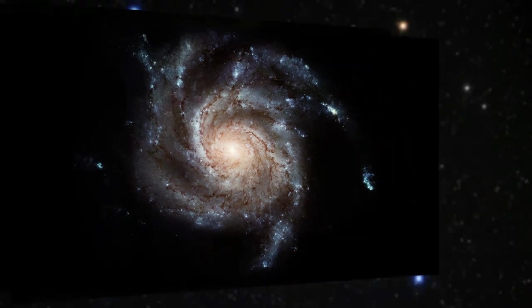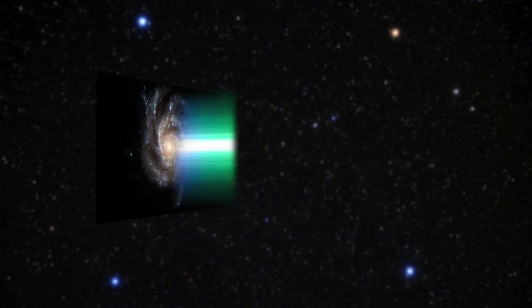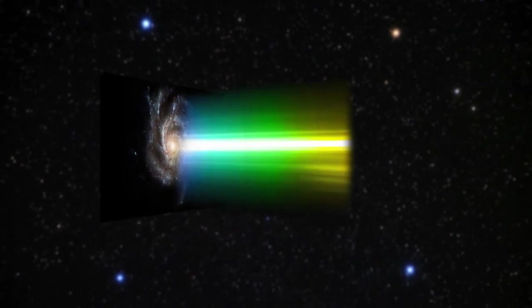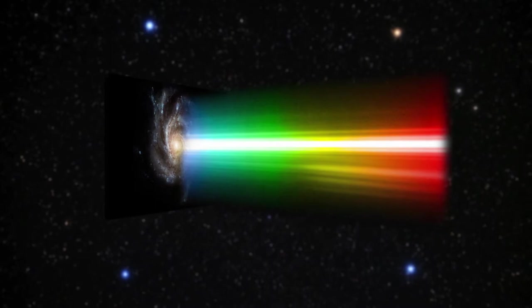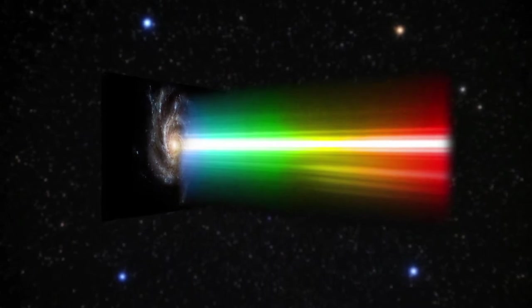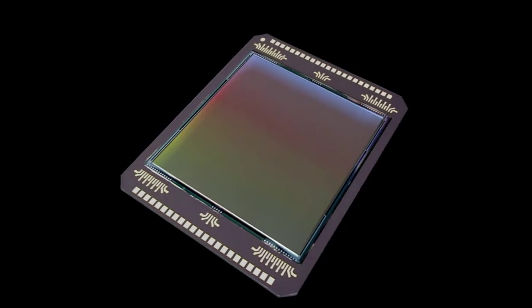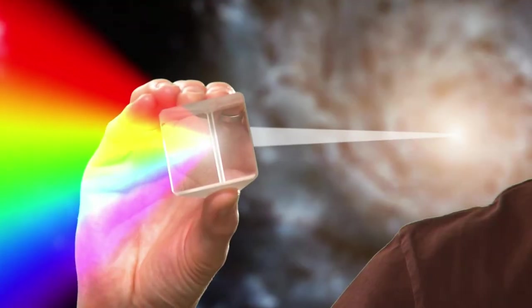Once the light enters the spectrograph, it is split by a dispersive optical element into its different components, or wavelengths, in order to be studied. This element acts much like rain droplets that disperse the light to form a rainbow. This dispersed light is then focused onto a detector, and it is seen as a spectrum.